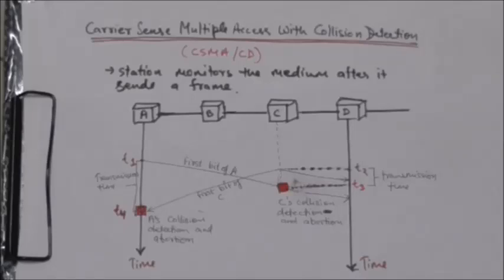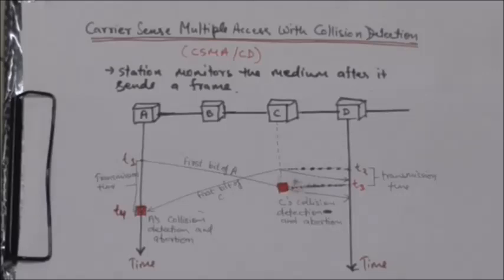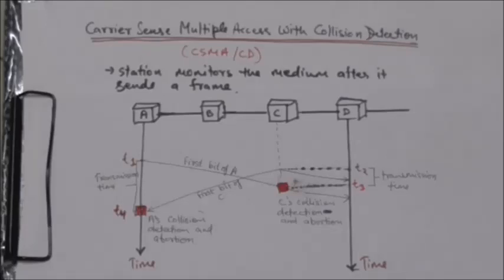Now consider two stations A and C. At time t1, station A starts sending the bits of its frame. At time t2, station C has not yet sensed the first bit sent by station A, so station C starts sending the bits of its frame, which propagate in both directions — to the left and to the right.